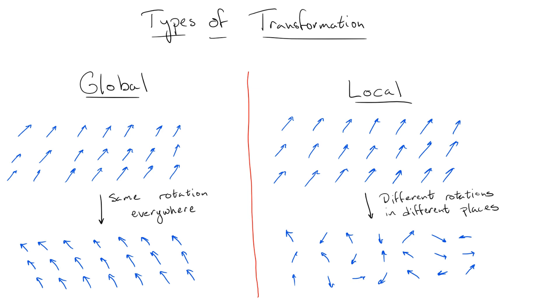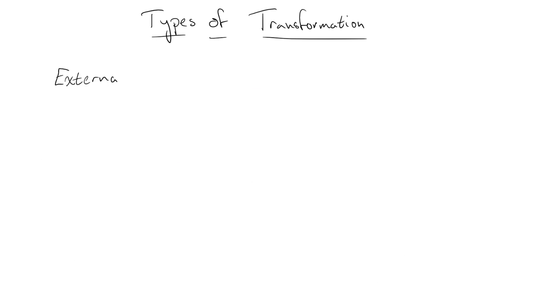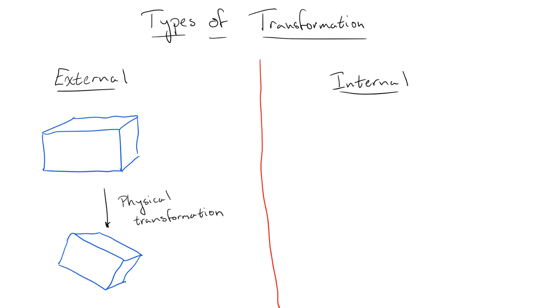But this isn't the end of the story. We can again separate these transformations into two other families, external versus internal. An external symmetry is a symmetry under a transformation which can be done physically. In other words, I can actually grab hold of my system and do the transformation. This is the case for things like rotations and translations where we can physically move the system to perform these transformations.